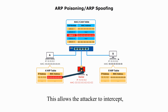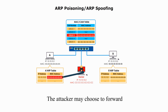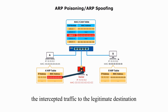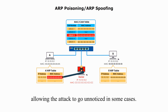This allows the attacker to intercept, monitor, modify, or block the network traffic as desired. The attacker may choose to forward the intercepted traffic to the legitimate destination after analyzing or modifying it, allowing the attacker to go unnoticed in some cases.